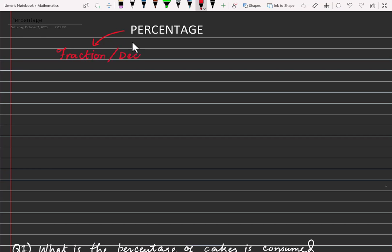But what is the difference? The only difference is that this fraction or decimal has the denominator always made 100.